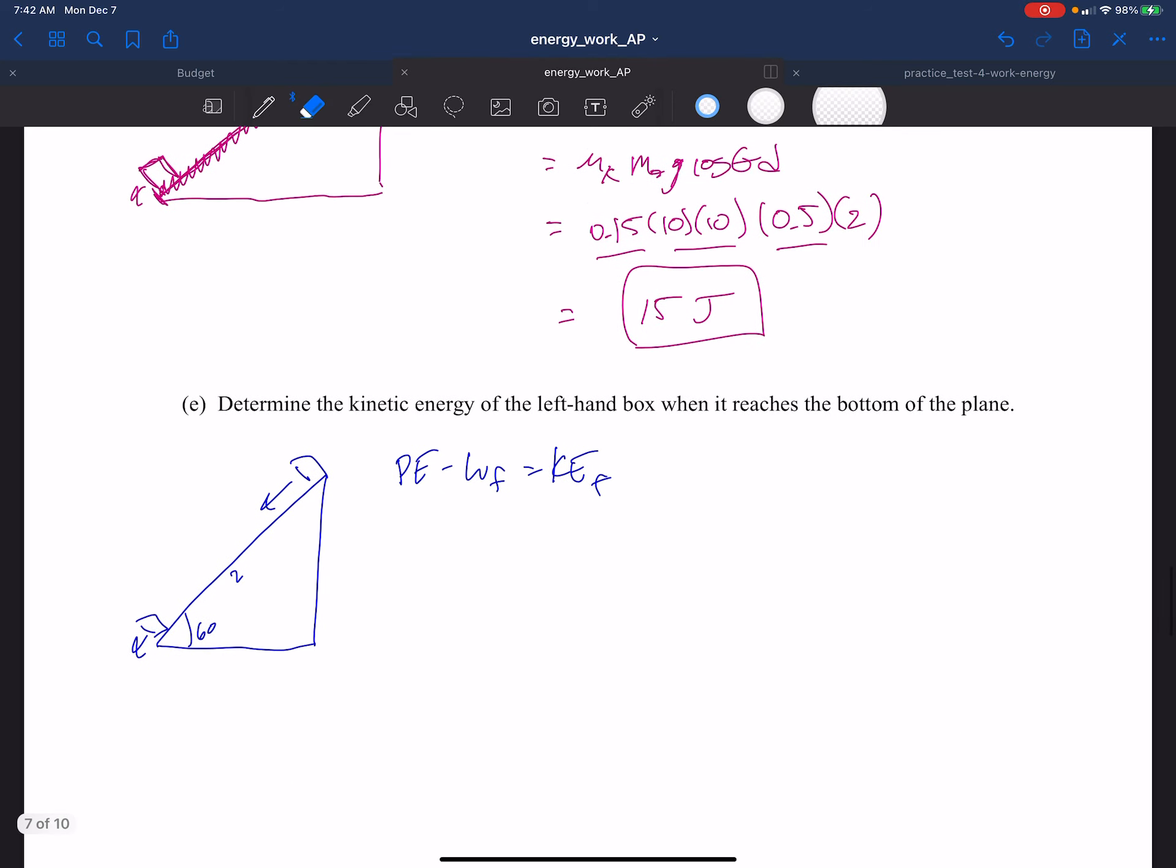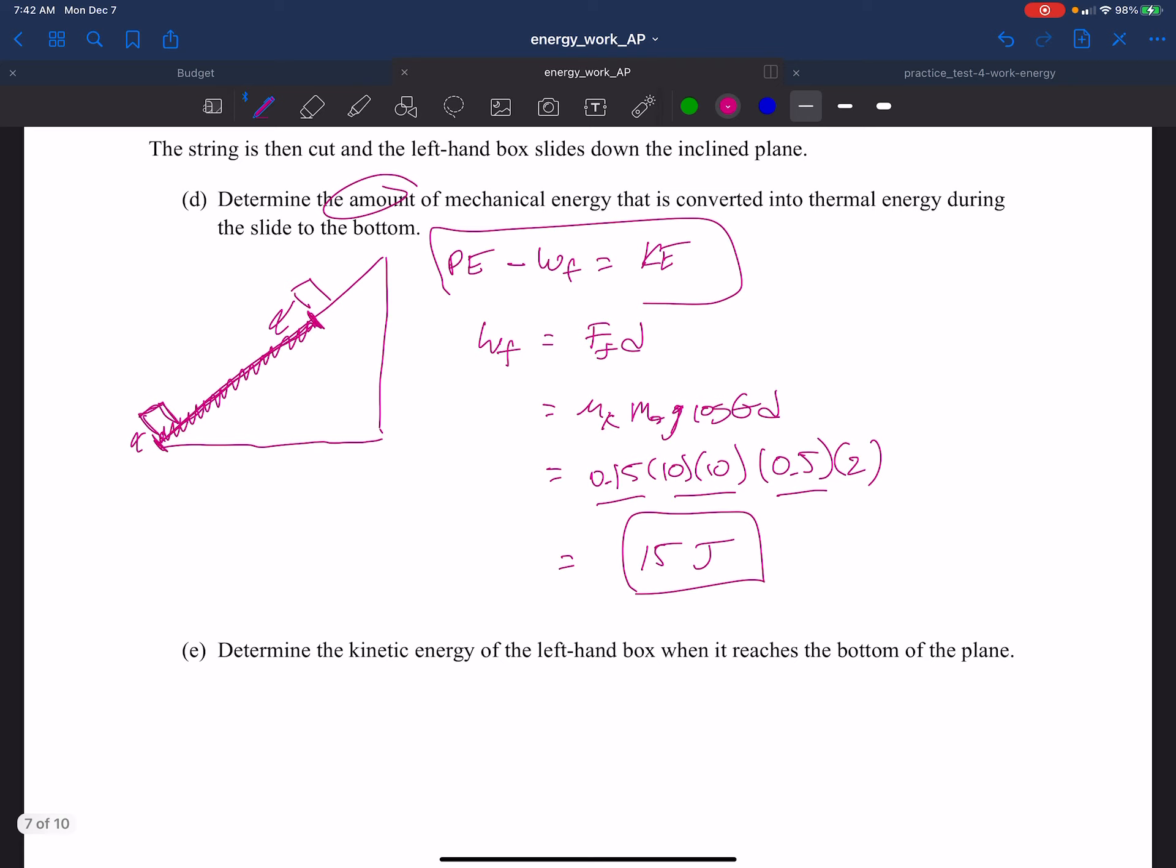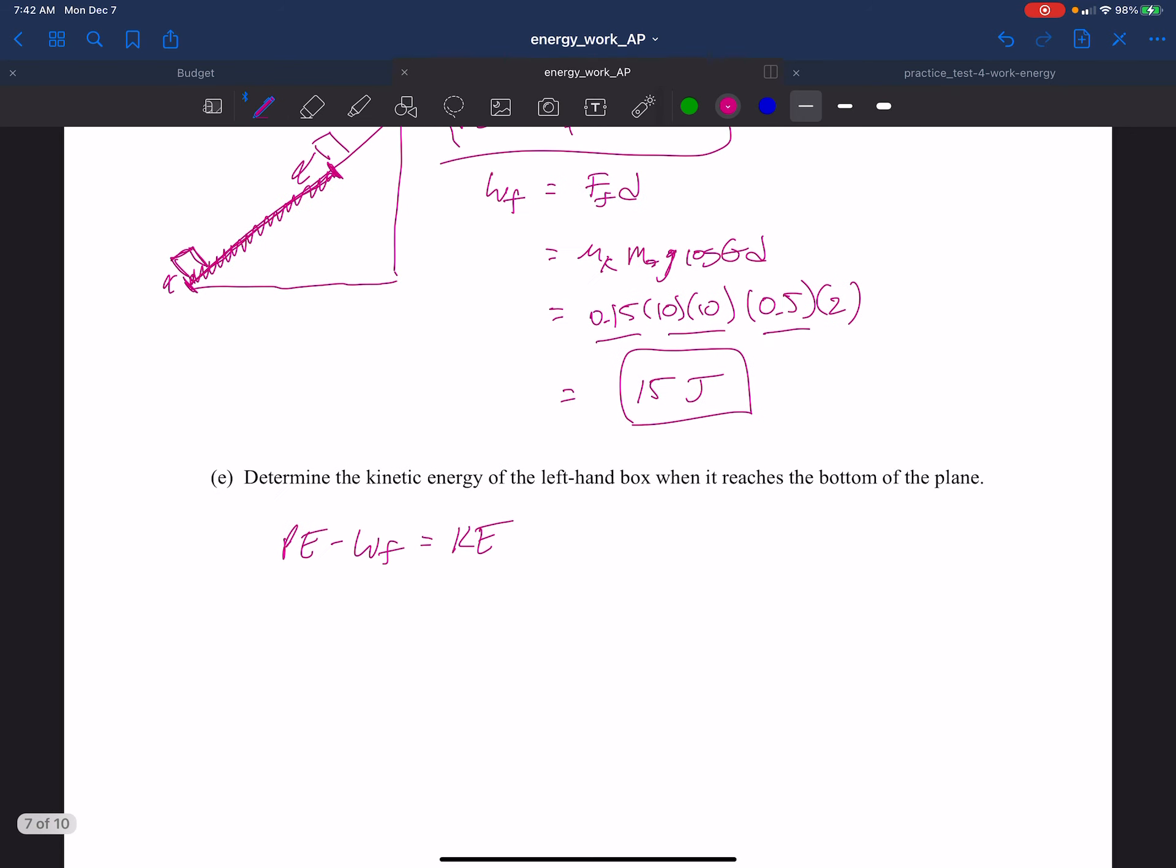What is the kinetic energy of the left-hand box when it reaches the bottom? So let's just take this idea right here and bring it down. PE minus the work done by friction will result in the final kinetic energy at the end. What is the kinetic energy? It doesn't even ask the velocity, just ask for the kinetic energy. And we already figured out the work. This is a piece of cake. So the potential energy is going to be M2GH minus the work done by friction, which I'm not going to re-solve, but we have that right above, it's 15, and that's going to be equal to our KE.